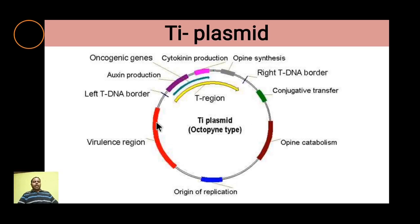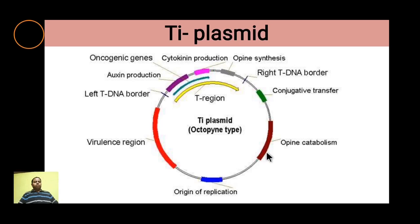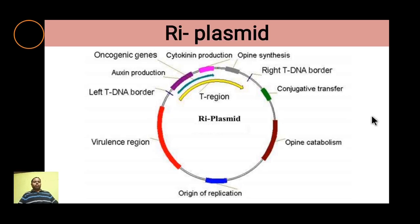In the Ti plasmid diagram, the T-DNA region contains an auxin production gene, an oncogene responsible for tumor production, a cytokinin production gene, and an opine synthesis gene. The left and right T-DNA borders mark the ends of the T-DNA that is transferred into plant cells. There is also a conjugative transfer gene, a gene for opine metabolism, a virulence region that helps the bacteria infect the plant, and an origin of replication.